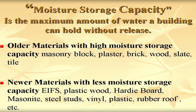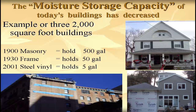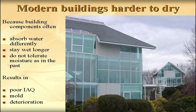In a building science class about 15–20 years ago, somebody calculated that a 2,000-square-foot building built in the 1900s would hold approximately 500 gallons of moisture. In the 1930s with wood frame and plaster board, it would hold only about 50 gallons. A 2001 home with vinyl siding, plastic vinyl windows, steel studs, drywall, and vinyl carpet would hold only five gallons. The moisture storage capacity of homes has significantly diminished, and this is why we have mold — there's less buffering capacity.